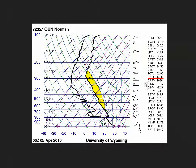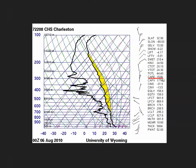Now compare that sounding to the one from Charleston, South Carolina at 0z on August 6, 2010. Again, CAPE is shaded in yellow, and the CAPE on this sounding is 1,538 joules per kilogram — a similar value to the Norman sounding, approximately equal to within a couple percent.